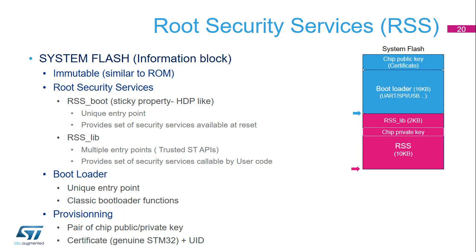The root secure services, or RSS, are embedded in a flash memory area called the secure information block programmed during ST production. The RSS enables, for example, the secure firmware installation, or SFI, thanks to the RSS extension firmware named RSSE-SFI. This feature allows customers to protect the confidentiality of the firmware to be provisioned into the STM32 device when production is subcontracted to a third party. RSS is available on all devices once TrustZone has been enabled via the TZEN option bit. It is composed of the RSS boot and the RSS library provided by ST. A pair of public and private keys is provisioned in the RSS area to enable user image authentication, as well as a certificate and a unique ID. The bootloader is also designed by ST, but unlike RSS, it can be used when TrustZone is disabled.